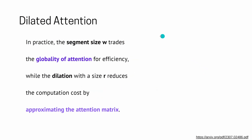In practice, because if we do a simplification, we trade in something — we can't get the same precision, the same quality. So what do we trade in with this methodology? The segment size W trades the globality of our self-attention mechanism for efficiency. While the dilation factor reduces the computation cost of our squared complexity by approximating the attention matrix and setting a lot of elements to zero.